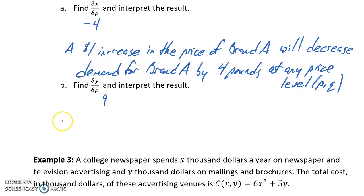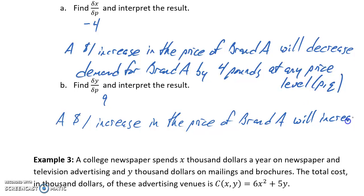In part B, we can say that a $1 increase in the price of brand A, because we're still looking at the derivative with respect to P, the variable we're increasing is the price of brand A. Since the result is positive, this will increase the demand for brand B.